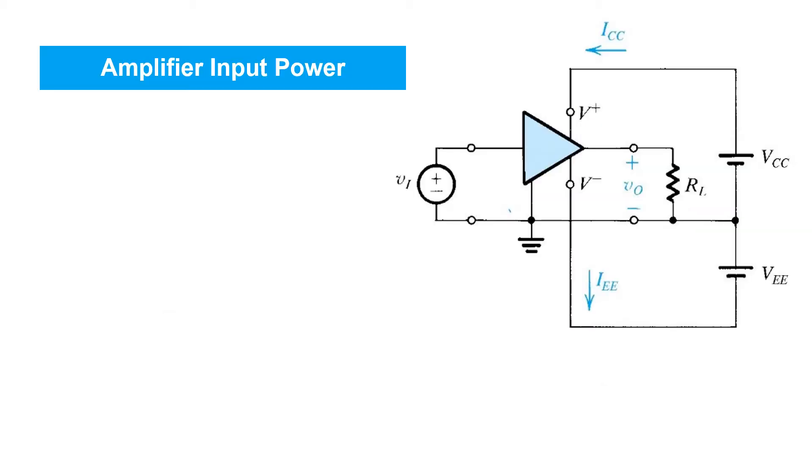The amplifier input power has two components. There's the power from the DC power supplies, that we'll call PDC, and then there's the power from the input source VI, which we'll call PIN.